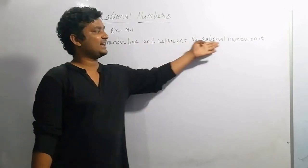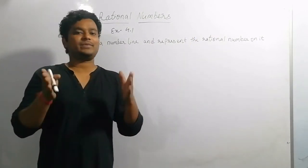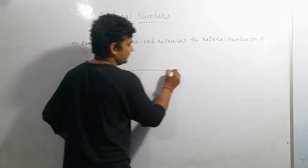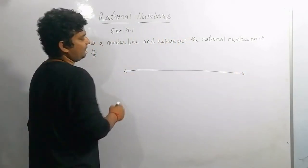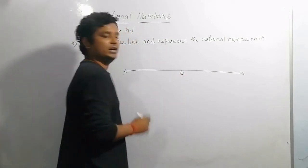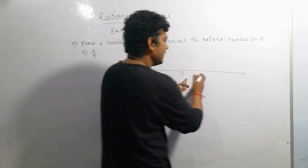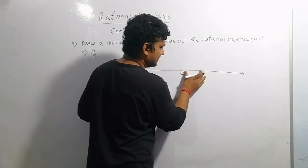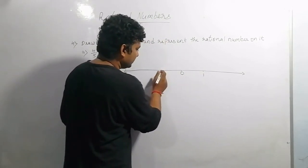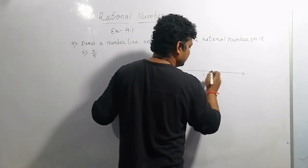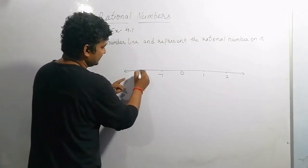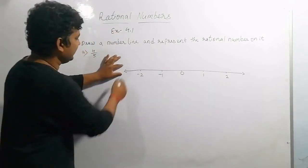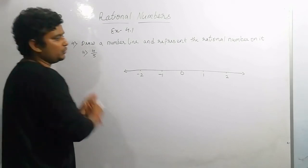The next question asks us to draw a number line and represent rational numbers on it. We draw a straight line and mark the center as zero. To the right side we take positive numbers, and to the left side negative rational numbers. If the distance of 1 unit is marked, then the same distance to the left gives minus 1, further right gives 2, and further left gives minus 2. The number line goes from negative infinity to positive infinity.